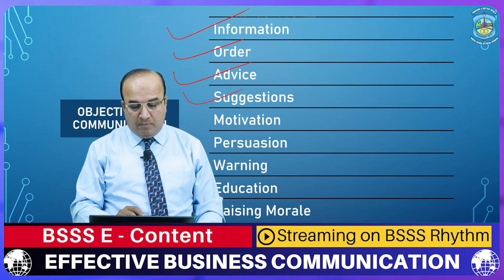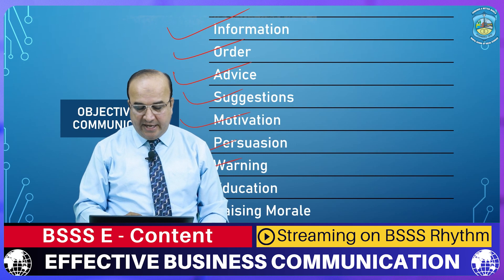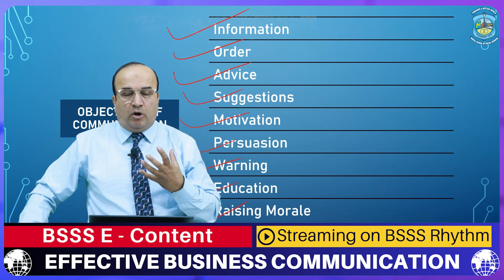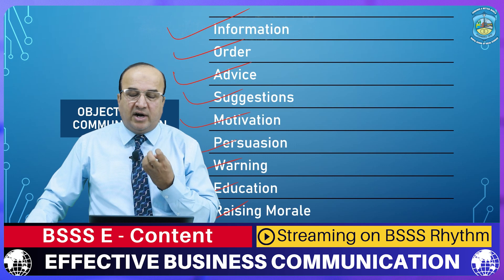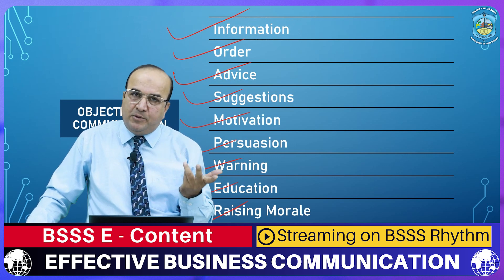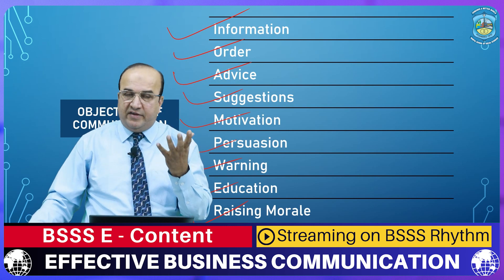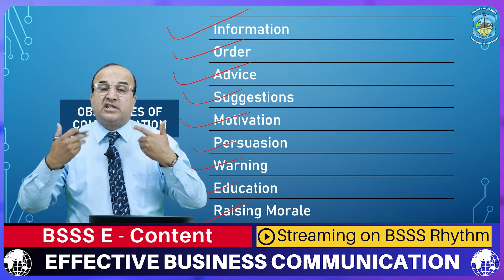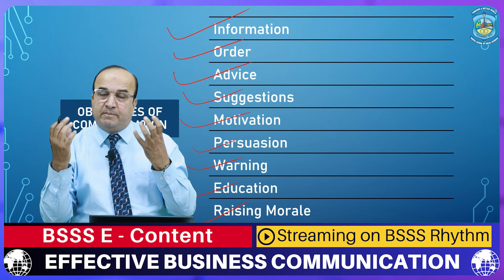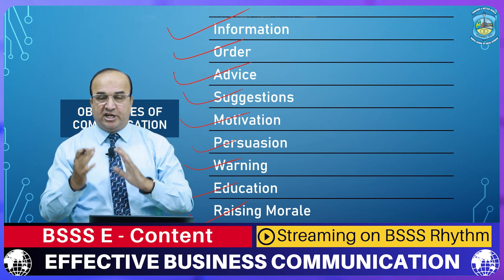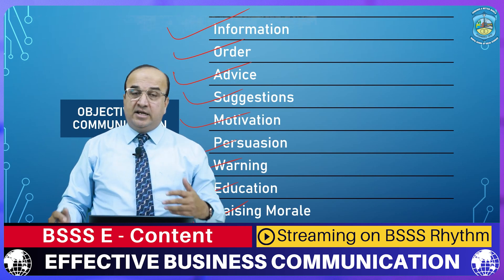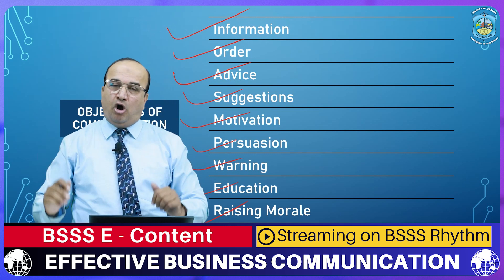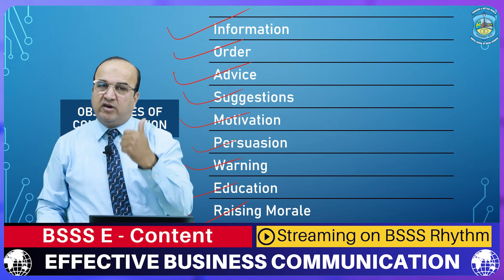Other objectives of communication include advice, suggestions, motivation, persuasion, warning, education, and raising morale. The purpose of communication — why you are communicating — may be to give information, give an order, give advice, offer suggestions, or motivate someone. If you are trying to persuade or convince somebody, that is also an objective of communication. Right now I am educating all of you using oral communication. There are two types of communication: verbal and non-verbal.